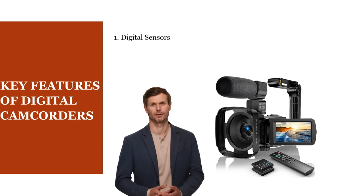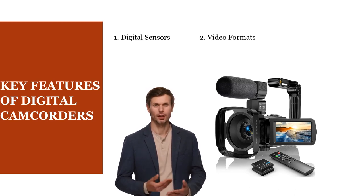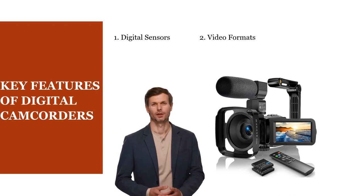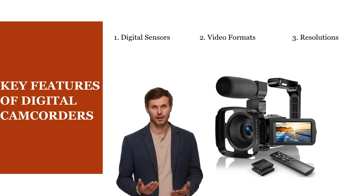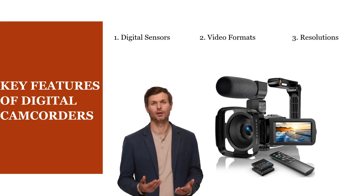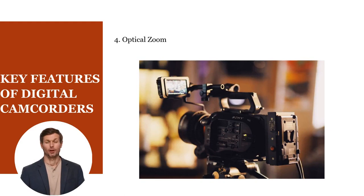Digital camcorders record video in various digital formats such as AVCHD, MP4, MOV, and more. These formats offer different compression methods, resolutions, and compatibility with different devices and editing software. Digital camcorders can capture video in a range of resolutions, from standard definition (SD) to high definition (HD) and even 4K Ultra HD. Higher resolutions provide more detail and clarity. Many digital camcorders also offer optical zoom capabilities, allowing users to zoom in on subjects without sacrificing image quality, achieved through the movement of lens elements.